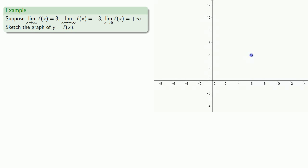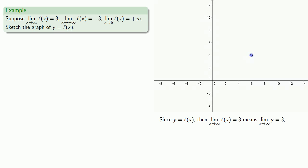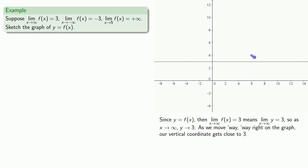Well, that was fun. Let's see what else we can do. Suppose I have some limits as x goes to infinity. Since y equals f of x, the limit as x goes to infinity of f of x equals 3 means the limit as x goes to infinity of y is equal to 3. So as x goes to infinity, y goes to 3. As we move way off to the right on the graph, our vertical coordinate gets close to 3, and this corresponds to having a horizontal asymptote of y equals 3.